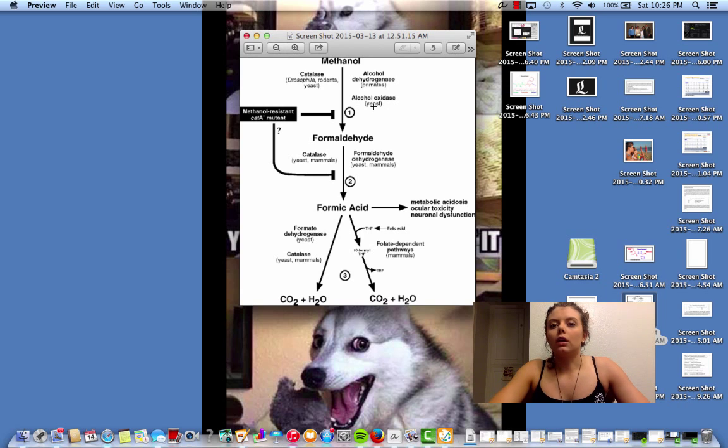Now, you're thinking, I probably never want to ingest methanol in my entire life because it turns into formaldehyde and formic acid, which are both neurotoxins. So if you ingest methanol, you're ingesting neurotoxins because methanol will be converted down this pathway.